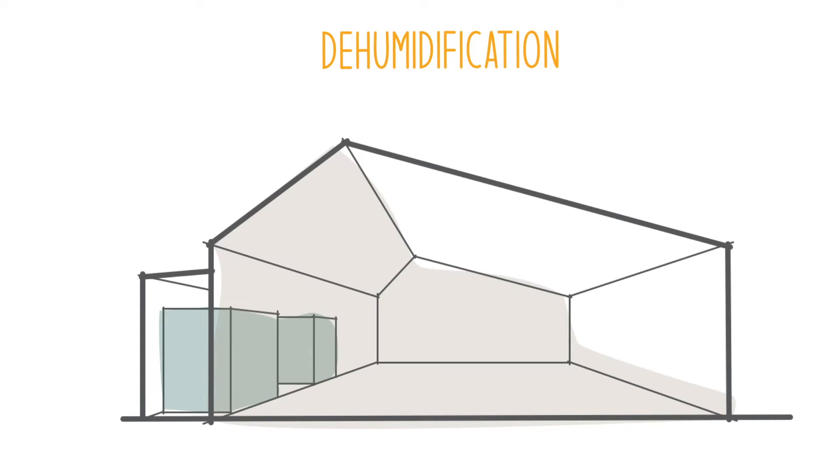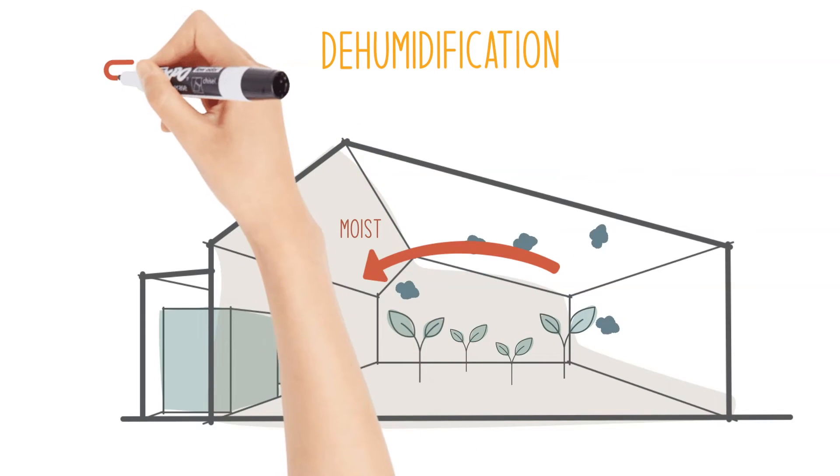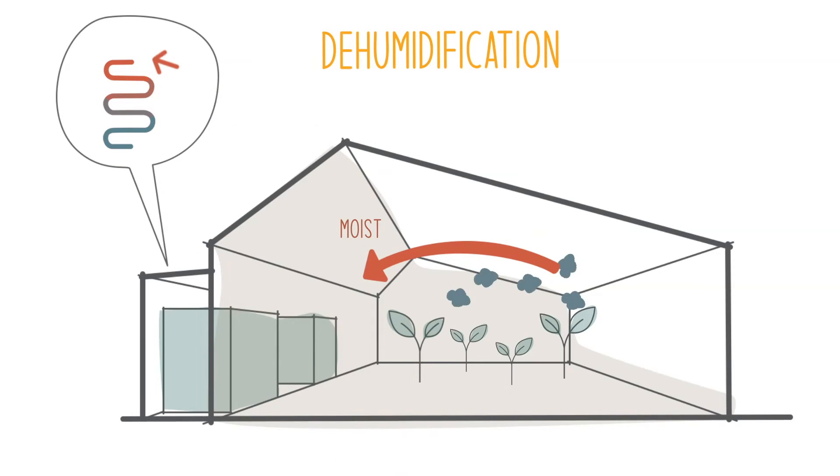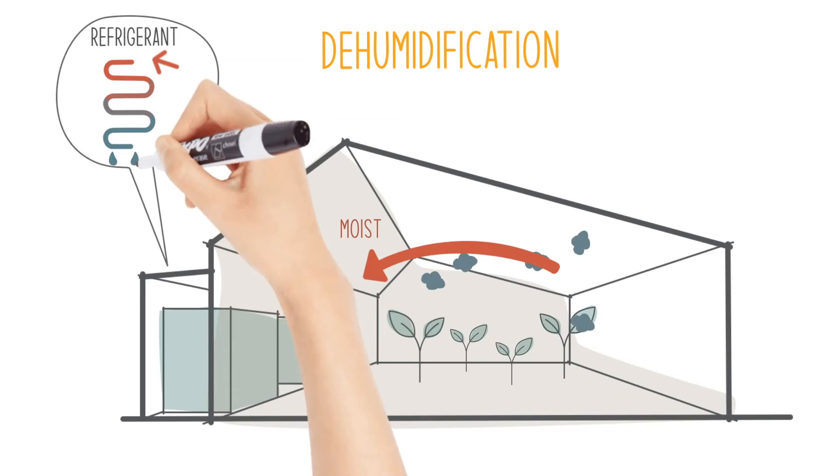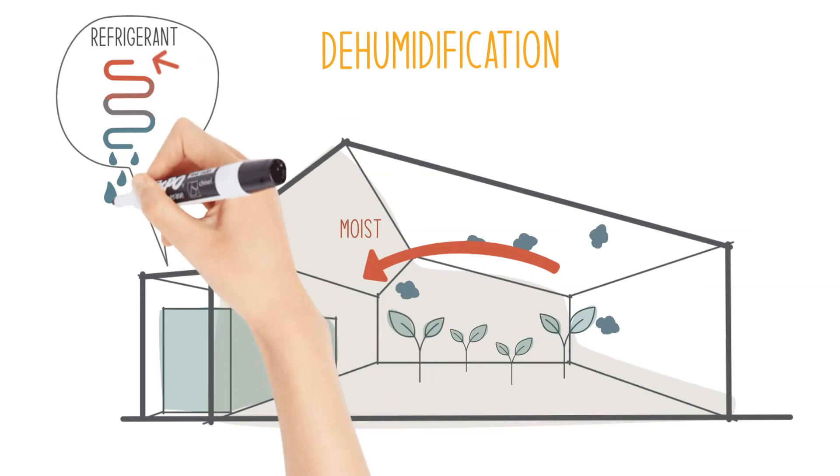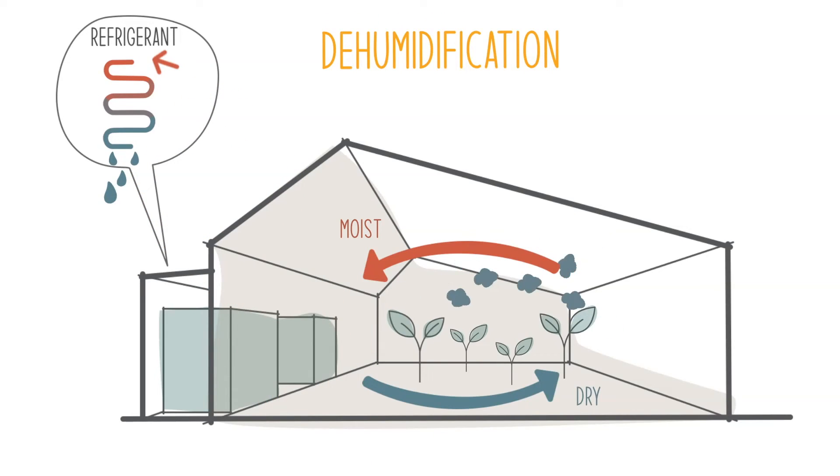The same process can be applied to dehumidification. In a grow environment, the excessive moisture introduced by plant transpiration is contained as water vapor in the air. The same air is then sucked towards the HVACD system. When air makes contact with the refrigerant cooling coil and reaches its dew point, condensation occurs, meaning dehumidification is happening.